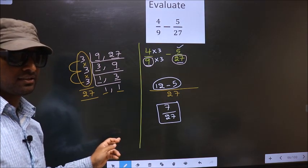12 minus 5 is 7 by 27. We cannot simplify this fraction. So this is our answer. Am I clear?